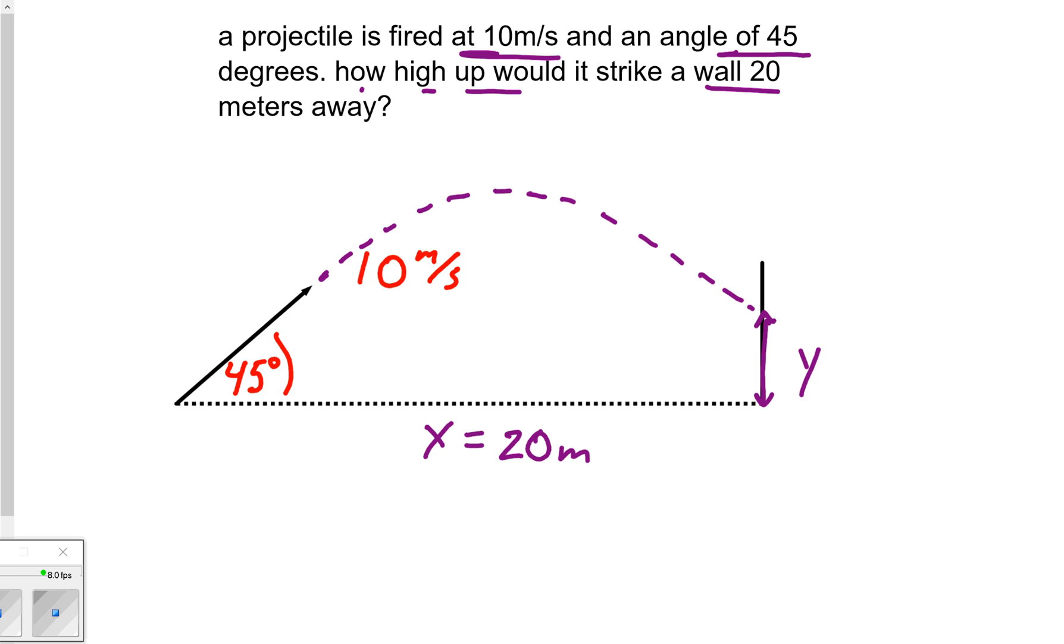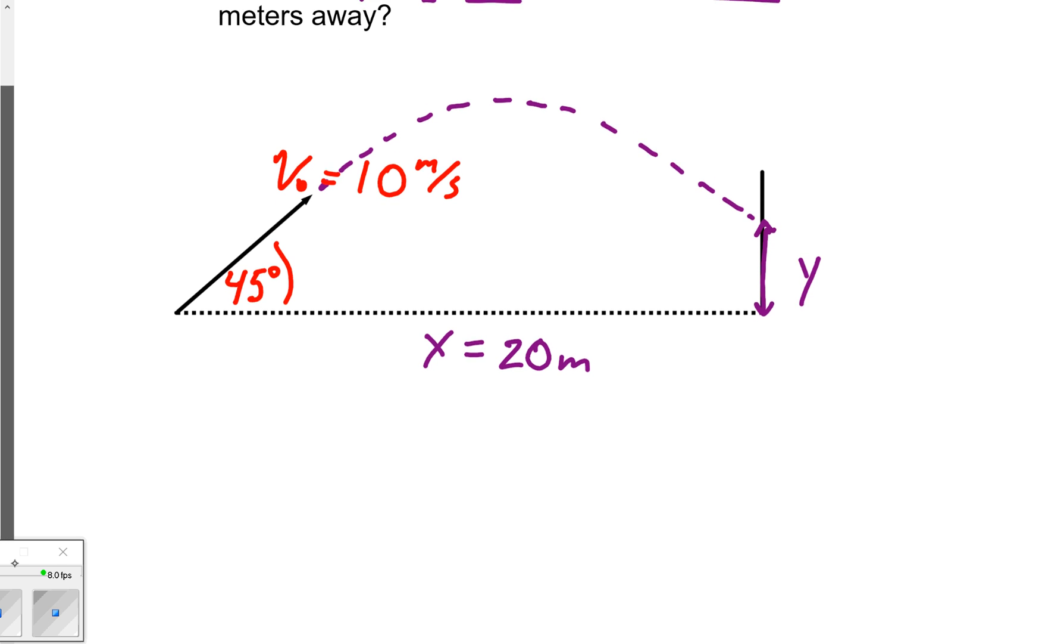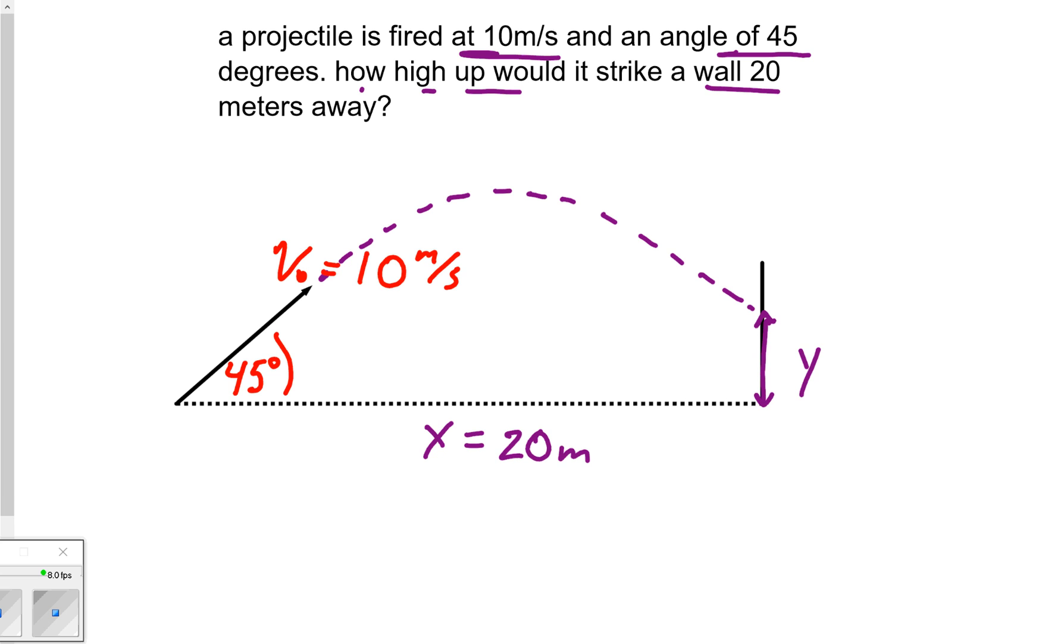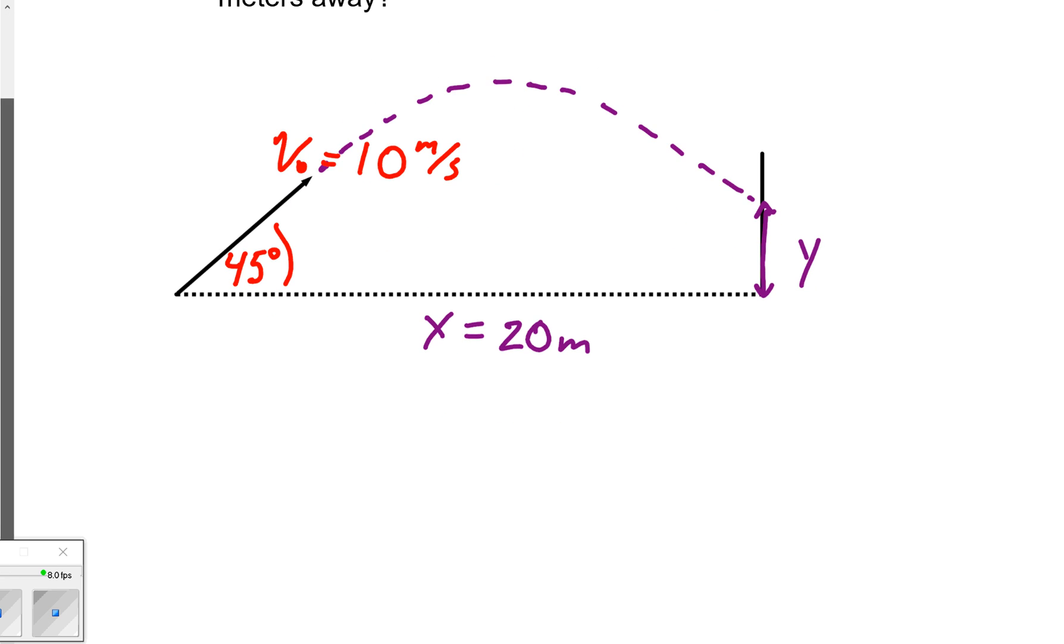Instantly somebody might be thinking this is supposed to be a hard problem, but I know that's not a hard problem. The reason why is because of what I just read: anytime a projectile gives you v₀ and it gives you an angle, I know it's not a hard problem. Let's get into why this is not a hard problem.